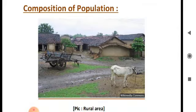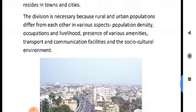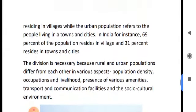In rural areas, population density is very low; in urban areas, population density is very high. In rural areas, people are fully engaged in primary activities like agriculture, fishing, etc. Urban people are usually engaged in secondary and tertiary activities like trade and the service sector. In rural areas, educational and medical facilities are not highly developed. In urban areas, there are better facilities for education, healthcare, etc., and the standard of living is very high.